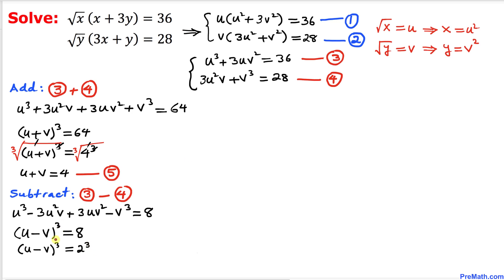Let's go ahead and undo the cubes by taking the cube root on both sides. The cube root and cube cancel on both sides, so we simply get u minus v equals 2. Let's call this equation number 6.